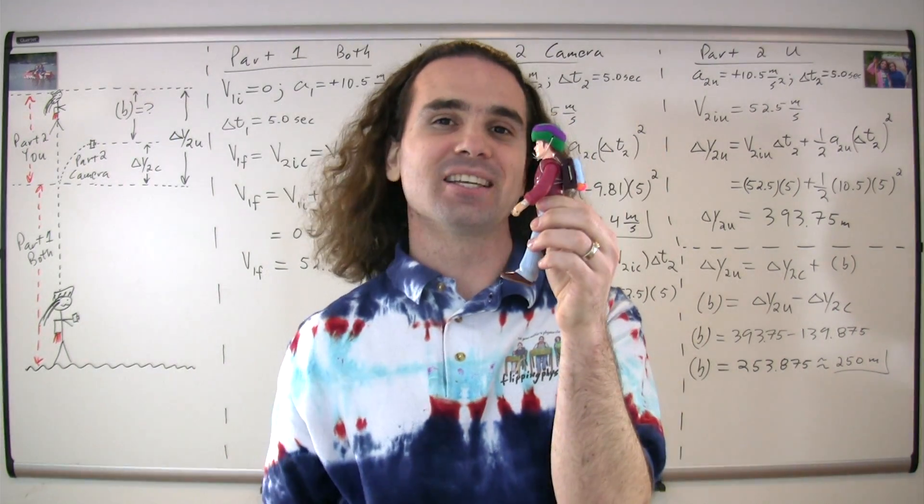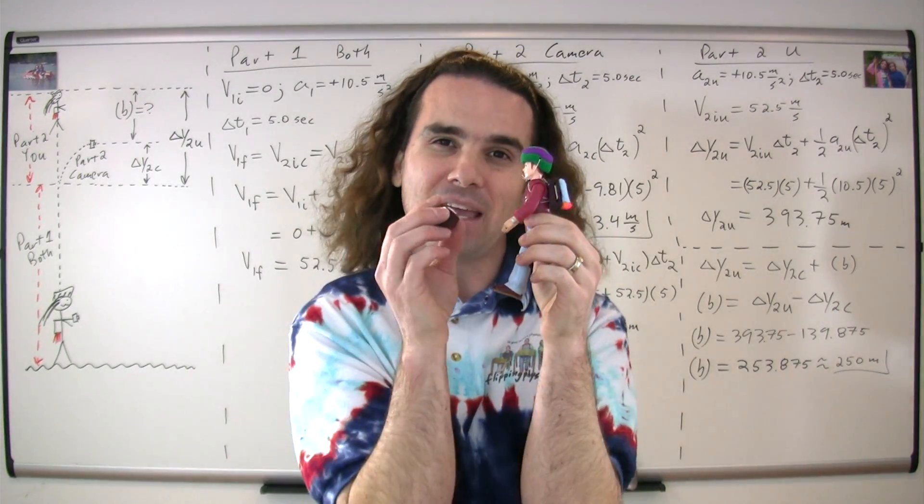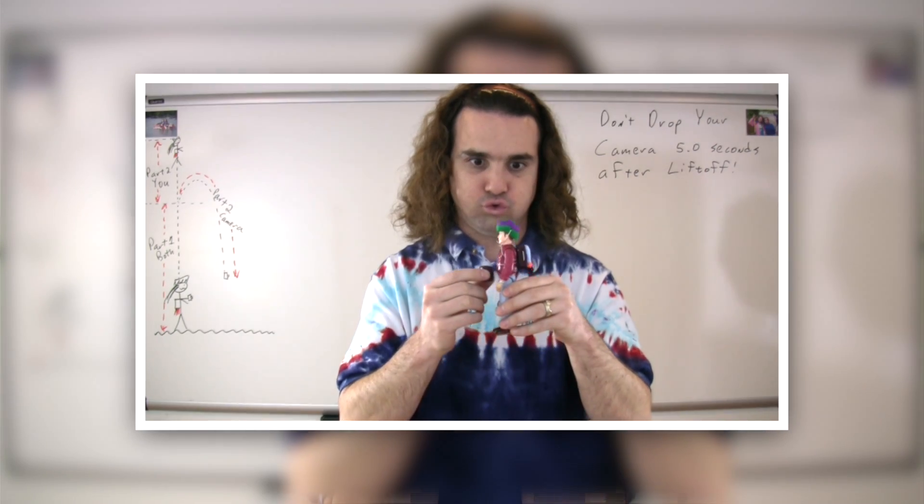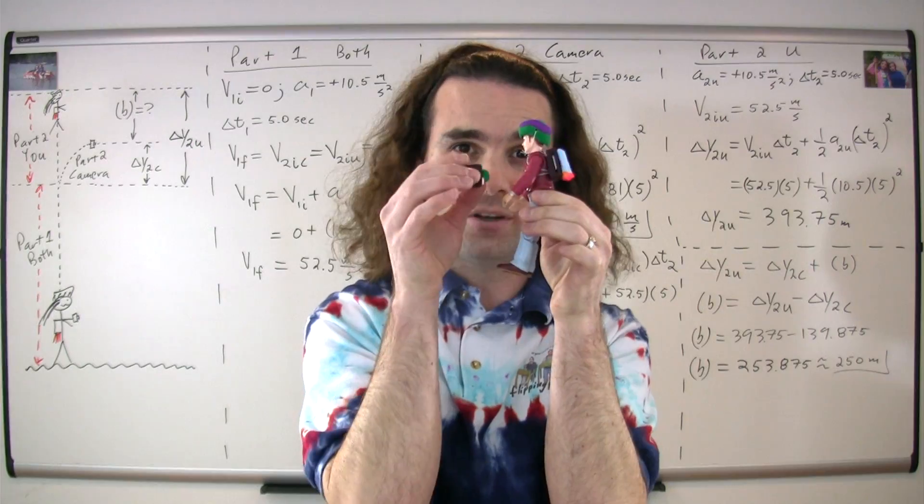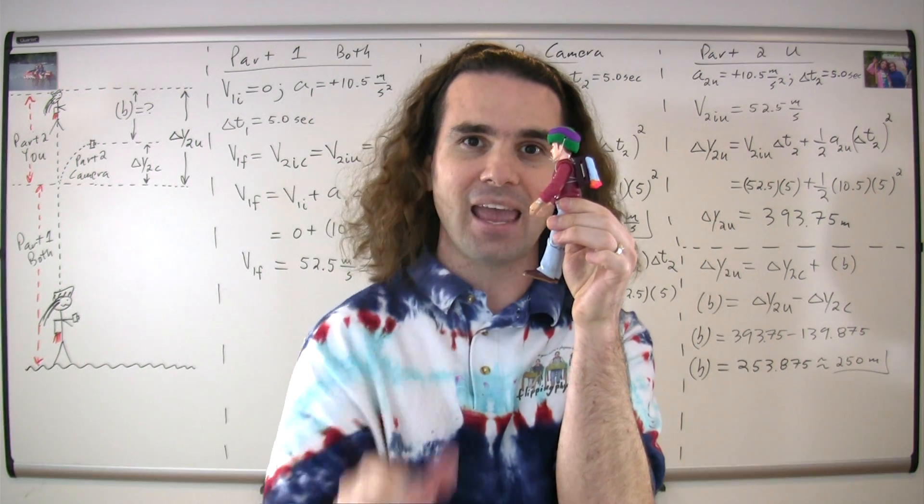Good morning. Today we're going to solve a complicated free fall acceleration problem involving a rocket-propelled person holding and dropping a camera. Therefore, we're going to have two objects in two parts.